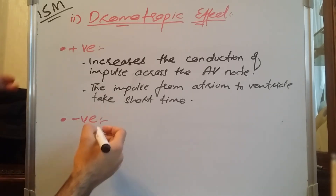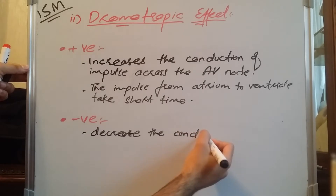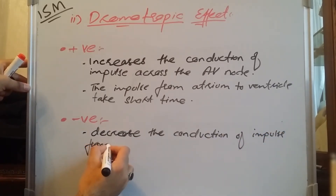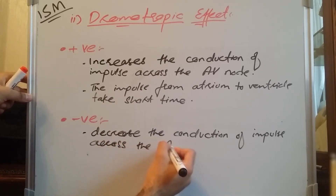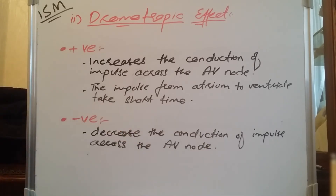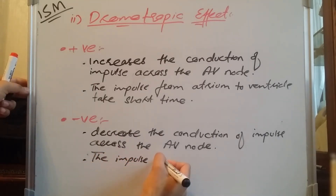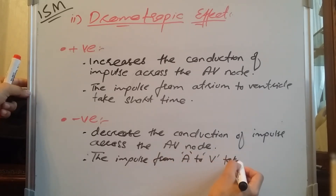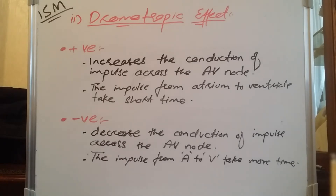In the negative dromotropic effect, it decreases the conduction of impulses across the AV node. This means the impulse from the atrium to the ventricle takes more time than normal. There are certain types of drugs which cause positive and negative dromotropic effects.